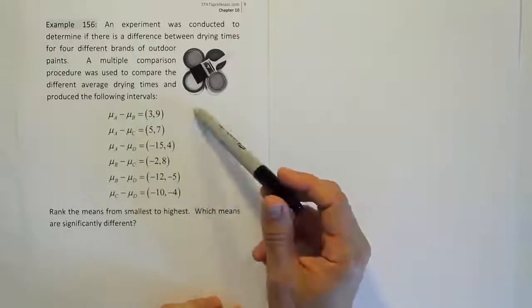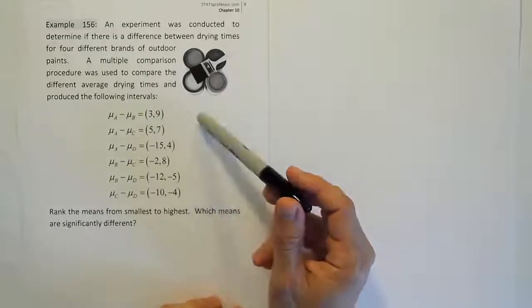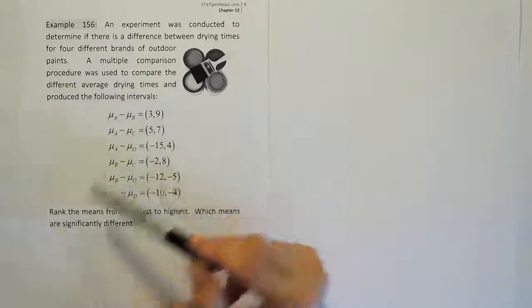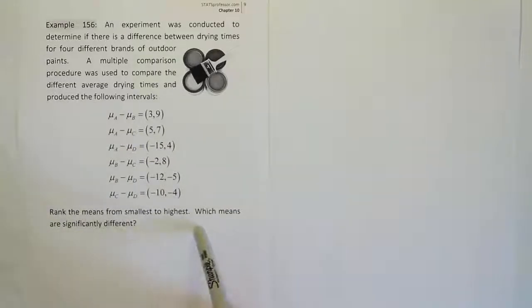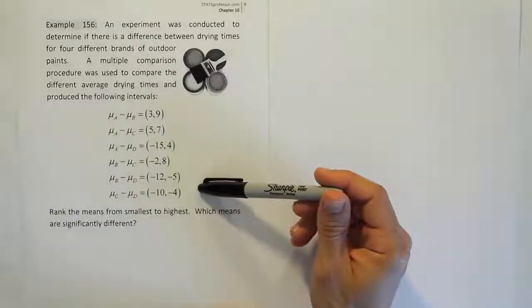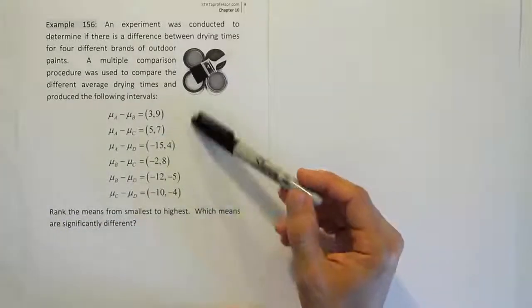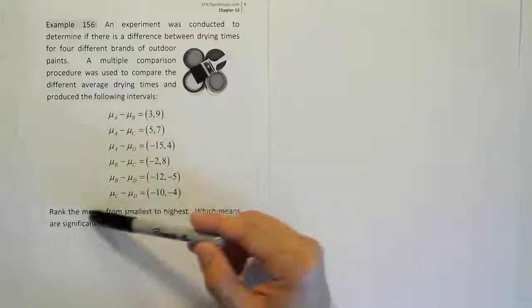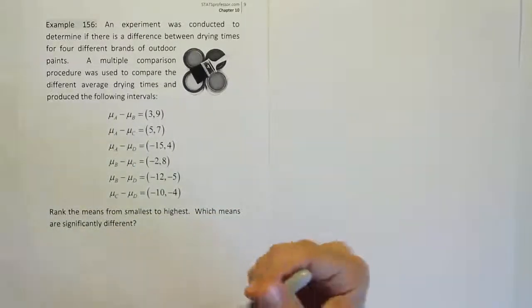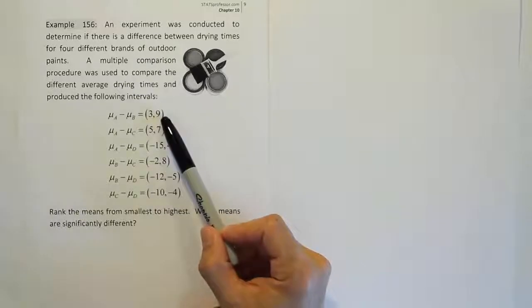That's probably the more important skill anyway, because in the real world people would use software to calculate these intervals. The problem says to rank the means from smallest to highest and identify which means are significantly different. Our goal is to look at the results of the computer output and, based on these results, determine the ranking of the means. So let's look at the intervals one by one and use our classic interpretation that we always use for confidence intervals.